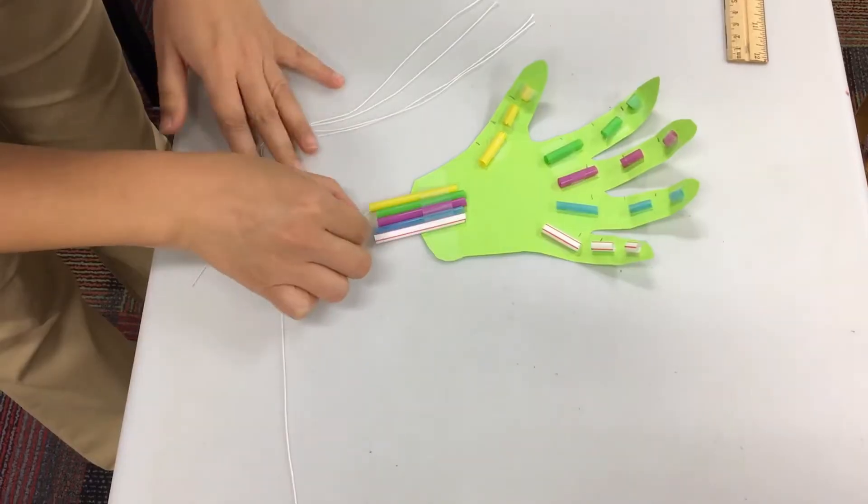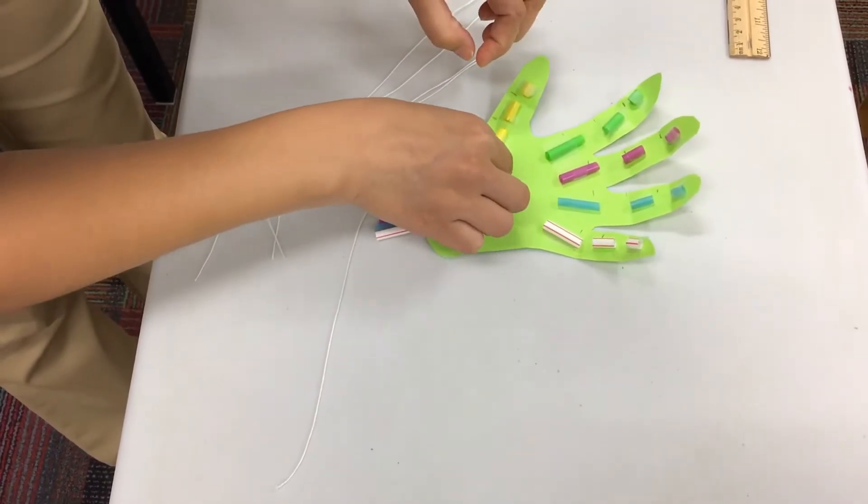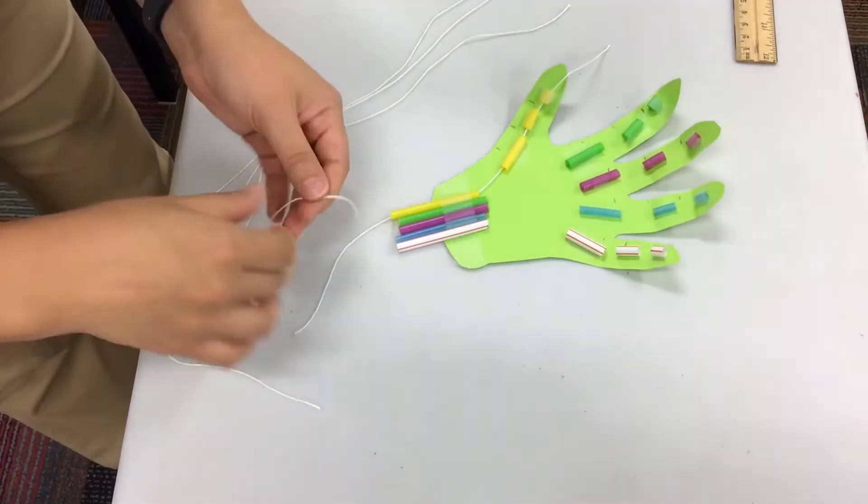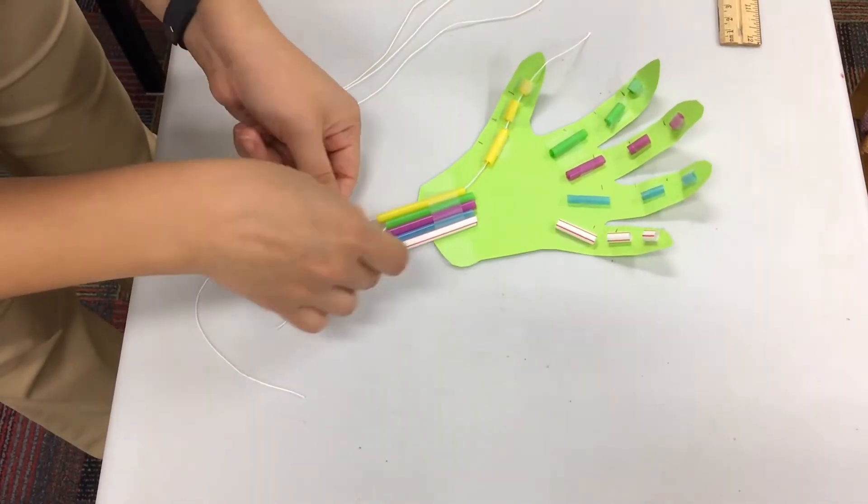You should have five pieces of yarn, 10 to 12 inches long each, and you're going to thread one yarn strand through each finger.